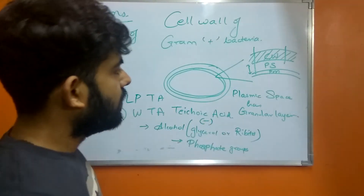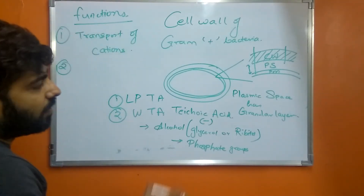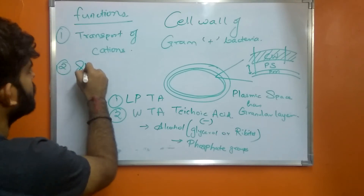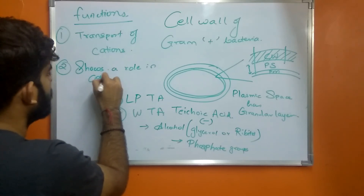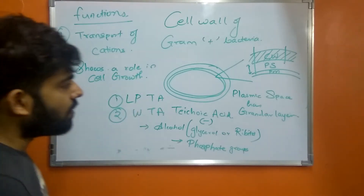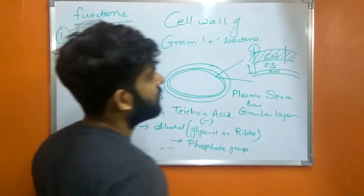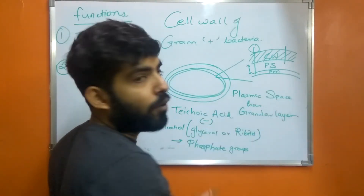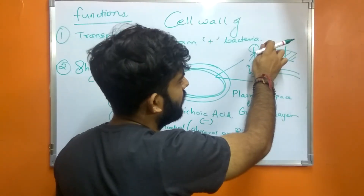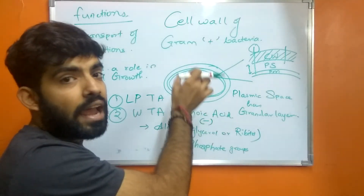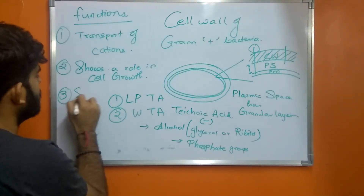The second function is that teichoic acid is assumed to play a role in cell growth, thereby preventing cell lysis. The third function is that it serves as an antigen, which helps to differentiate between two types of gram-positive bacteria, as it is present on the surface of the cell wall.